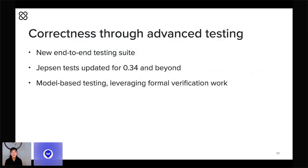Finally, we're verifying the correctness of our implementation through a variety of more advanced testing techniques. We've recently added a new end-to-end testing suite that spins up short-lived test nets in a wide variety of possible configurations. We're also updating some old and neglected Jepsen tests to further verify the correctness of Tendermint as a distributed system. We're also leveraging the formal verification work done by the Informal team to create model-based tests, which help verify that our implementations are correct and adhere to formally verified specifications.